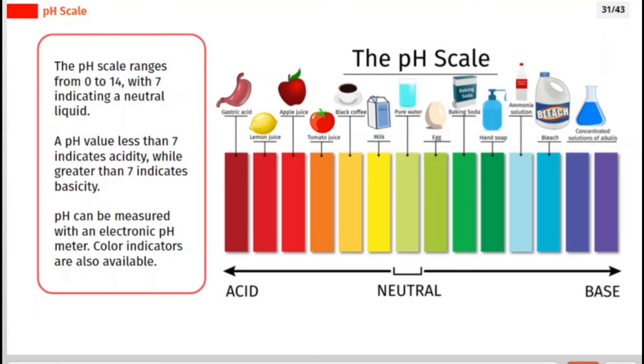The pH scale ranges from 0 to 14, with 7 indicating a neutral liquid. A pH value less than 7 indicates acidity, while greater than 7 indicates basicity. pH can be measured with an electronic pH meter. Color indicators are also available.